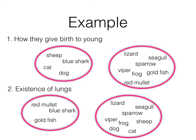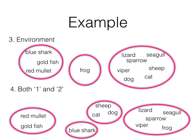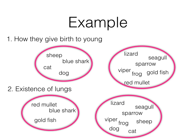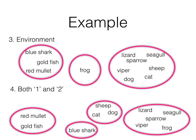Clustering by existence of lungs gives quite different clusters: the mullet, shark, and goldfish don't have lungs — they have gills — while all the rest do. Clustering by environment gives three groups: the shark, goldfish, and mullet live in water; the frog is amphibious; and the others live on land. We can also cluster by two attributes simultaneously — how they give birth and existence of lungs — giving yet another set of clusters.